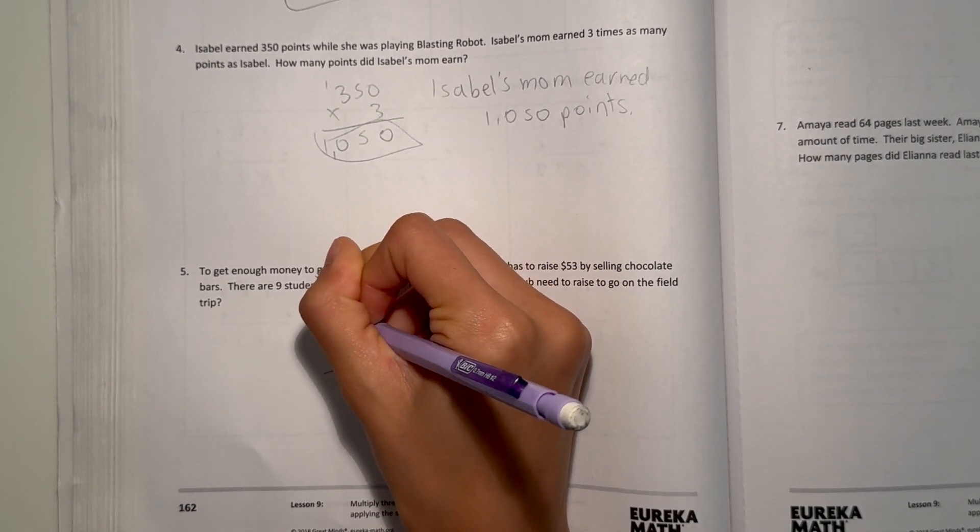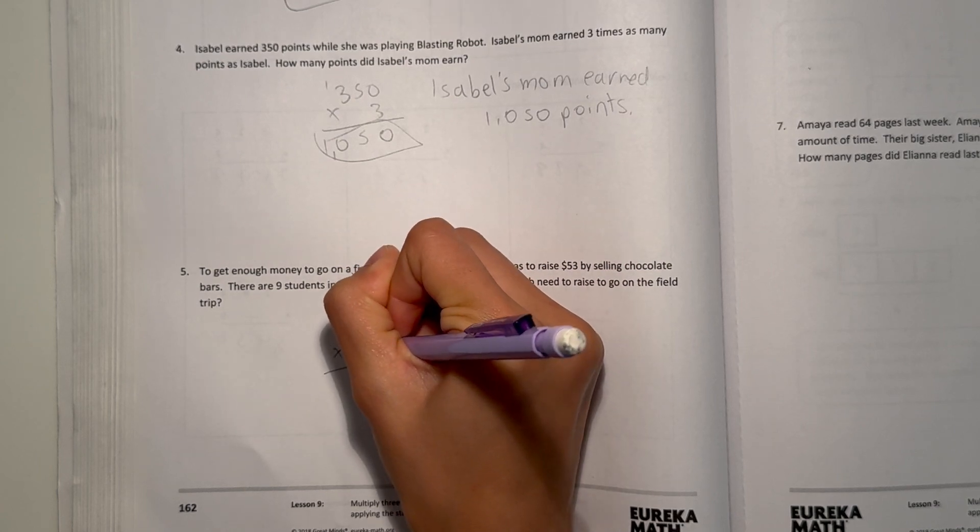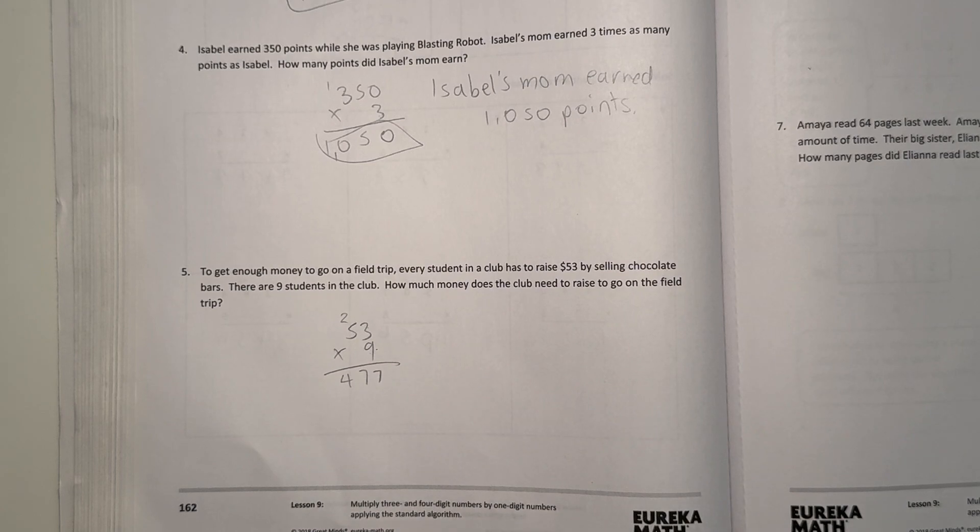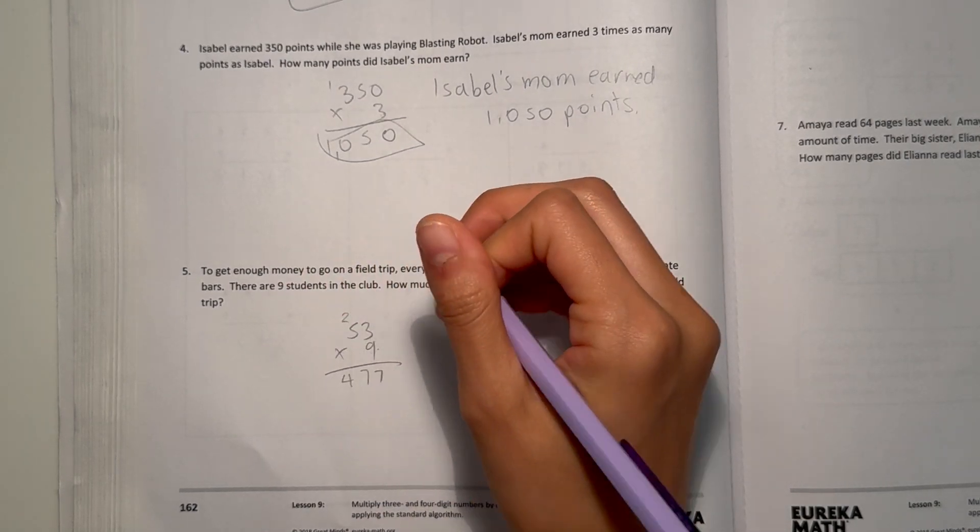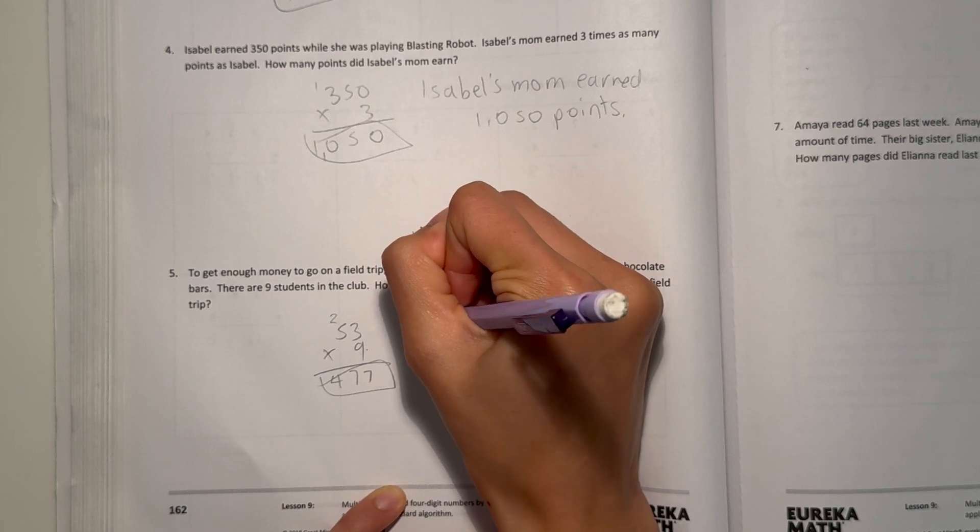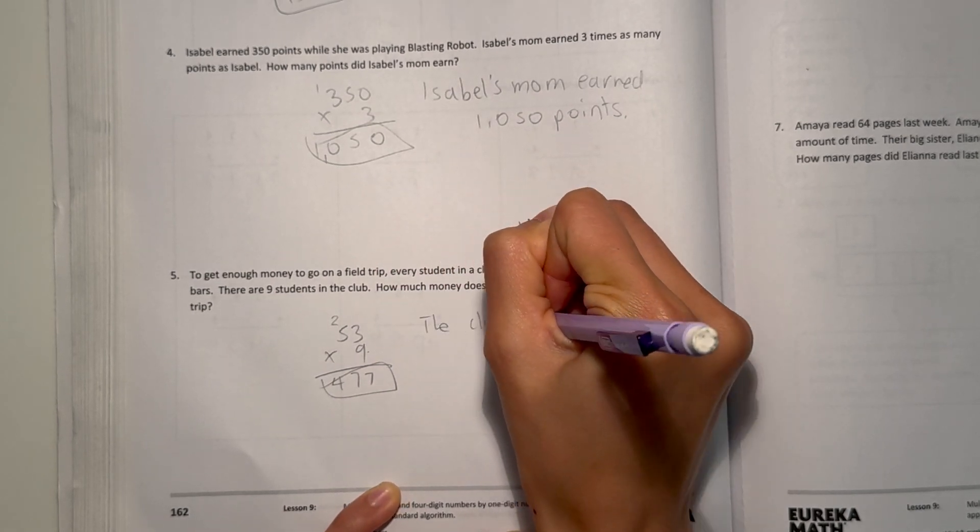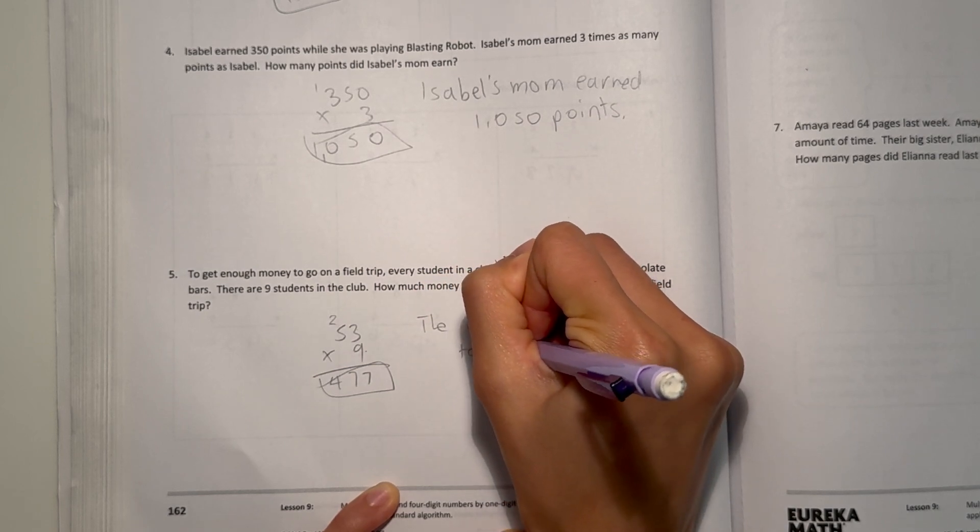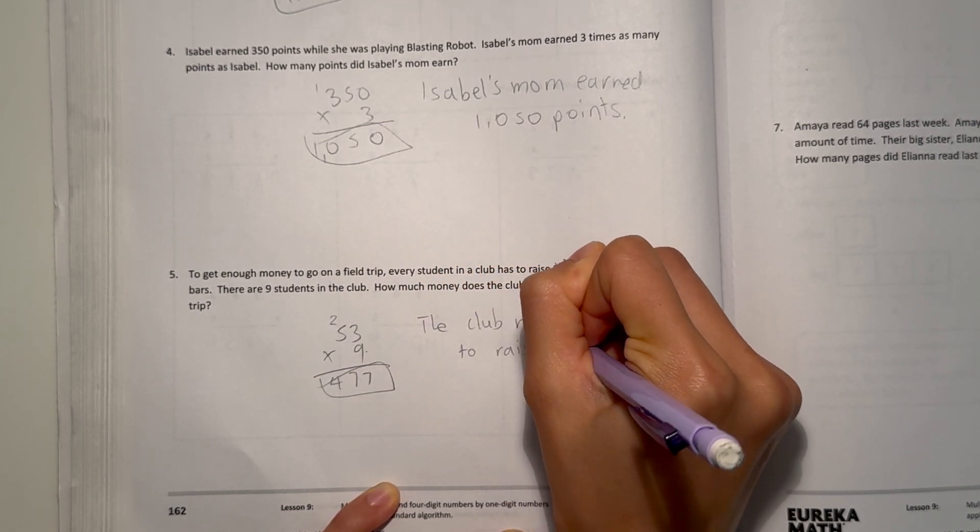3 times 9 is 27. 5 times 9 is 45, plus 2 is 47. So, our answer is 477. That means, the club needs to raise $477.